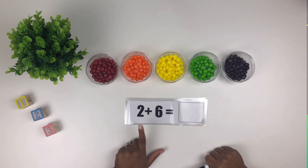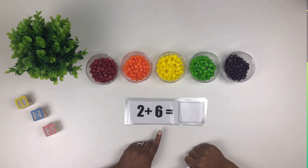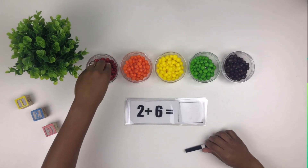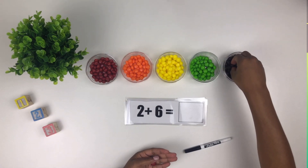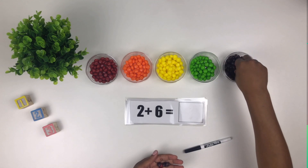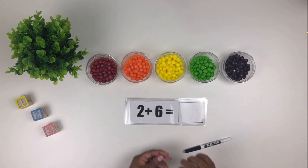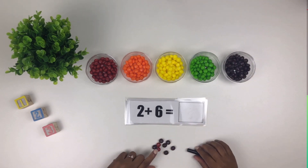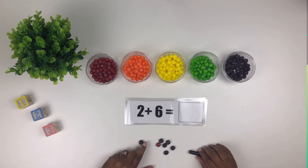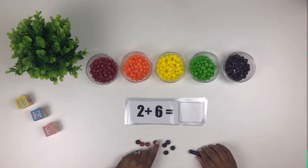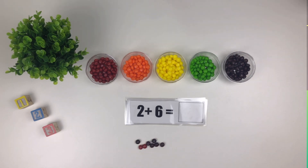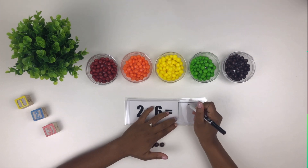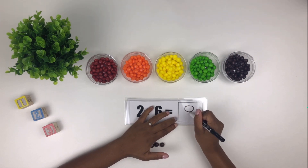Our next problem is two plus six. We're going to take two red Skittles and six purple Skittles. And we count one, two, three, four, five, six, seven, eight. So two plus six equals eight.